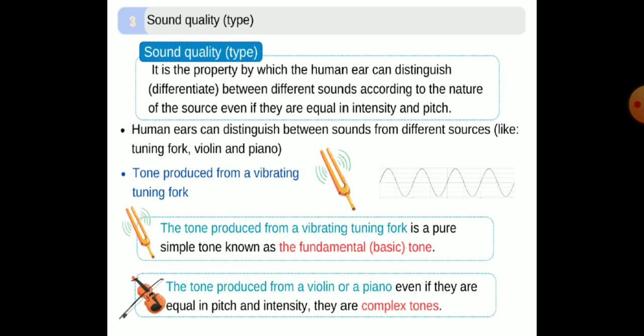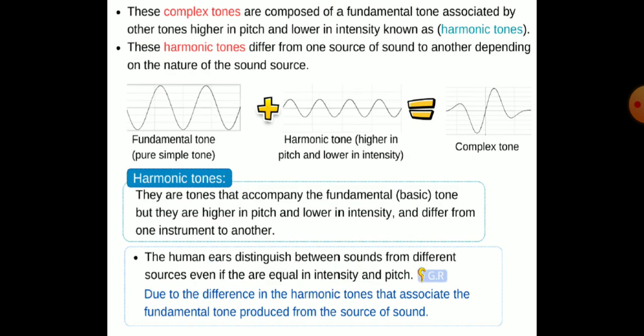Number three: sound quality, or sound type. It is a property by which the human ear can distinguish between different sounds according to the nature of the source, even if they are equal in intensity and pitch. Harmonic tones are tones that accompany the fundamental or basic tone, but they are higher in pitch and lower in intensity, and differ from one instrument to another.